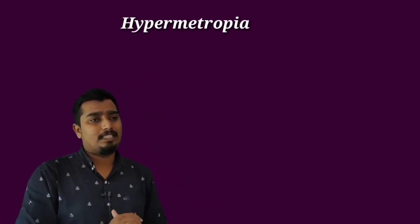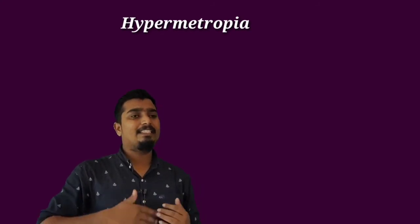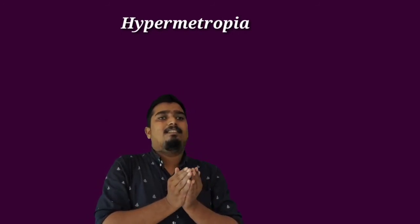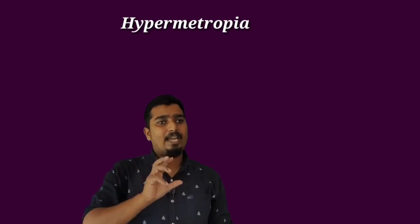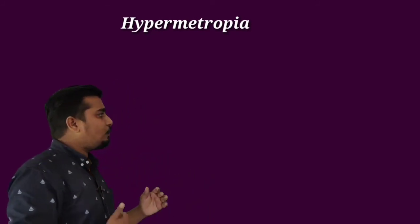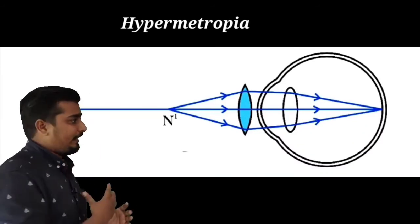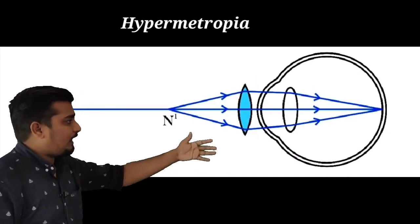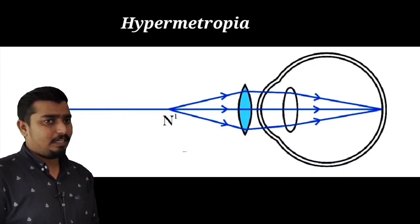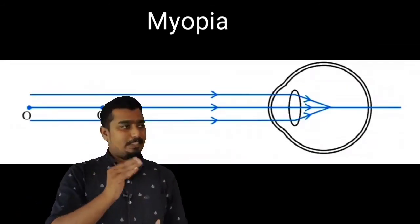The causes of hypermetropia are: the focal length of the eye lens is increasing, and the eyeball size is decreasing. This defect is corrected by using a convex lens of suitable power.